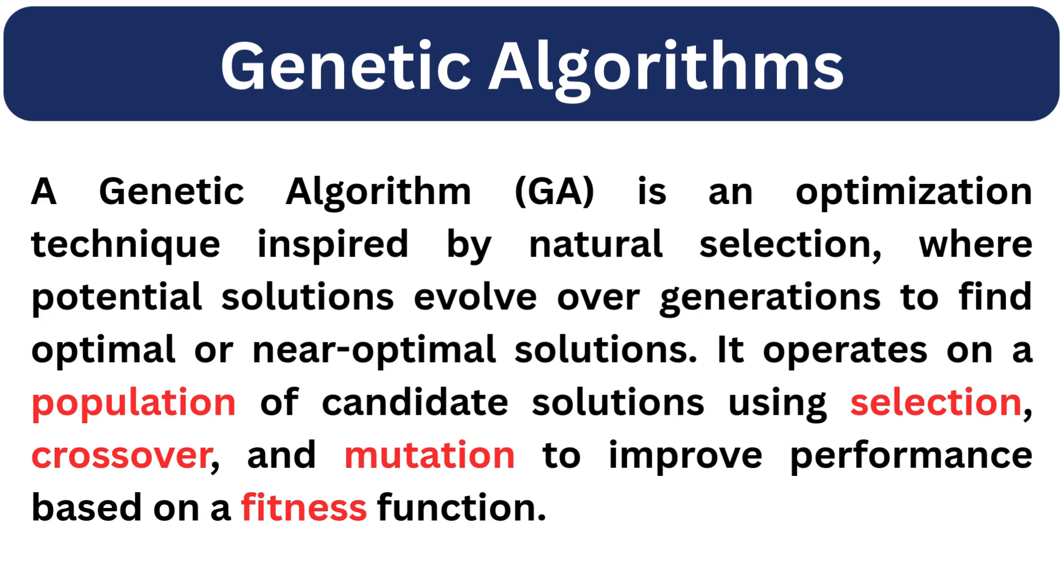Genetic algorithm is an optimization technique inspired by Darwin's theory of evolution. It's used to solve problems where traditional methods struggle. Genetic algorithms find the best solution by evolving a population of candidate solutions over multiple generations, just like species evolve over time. It operates on a population of candidate solutions using selection, crossover, and mutation to improve performance based on a fitness function.